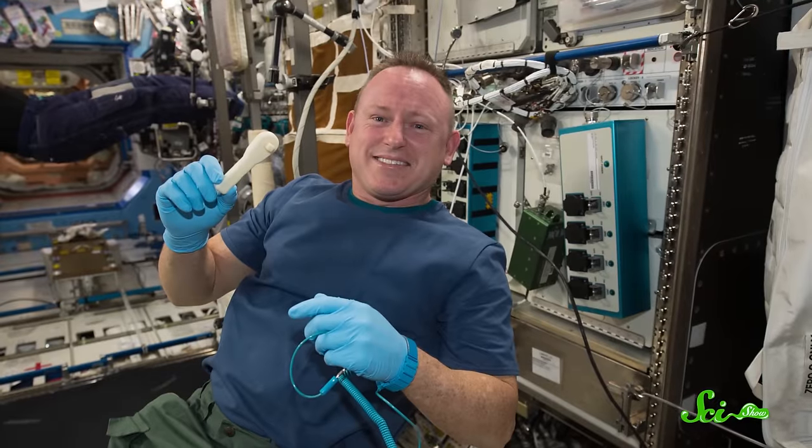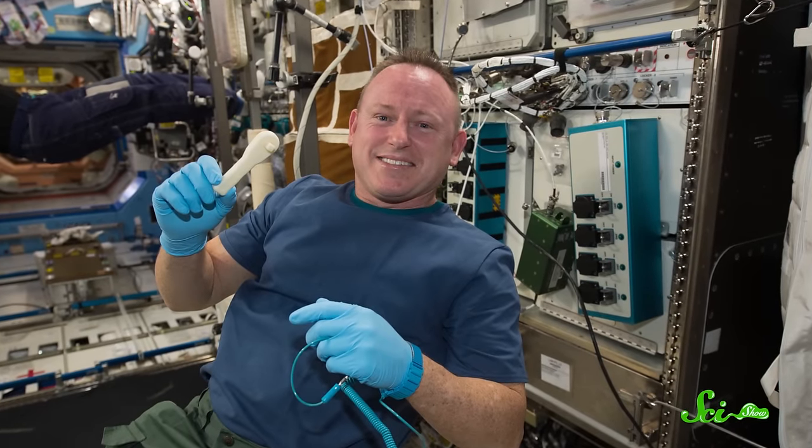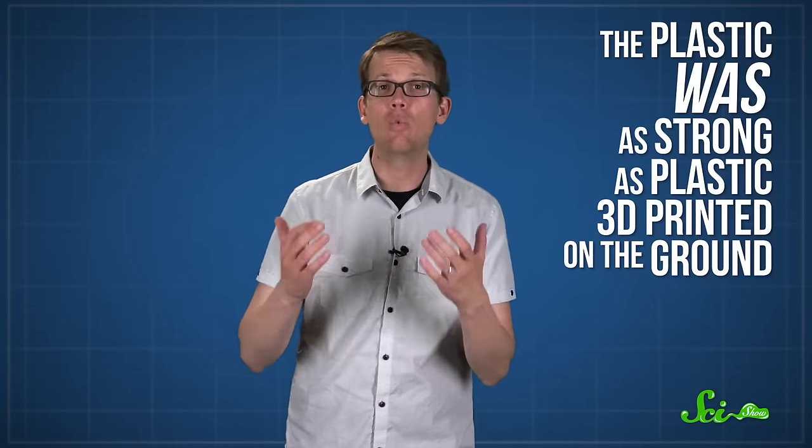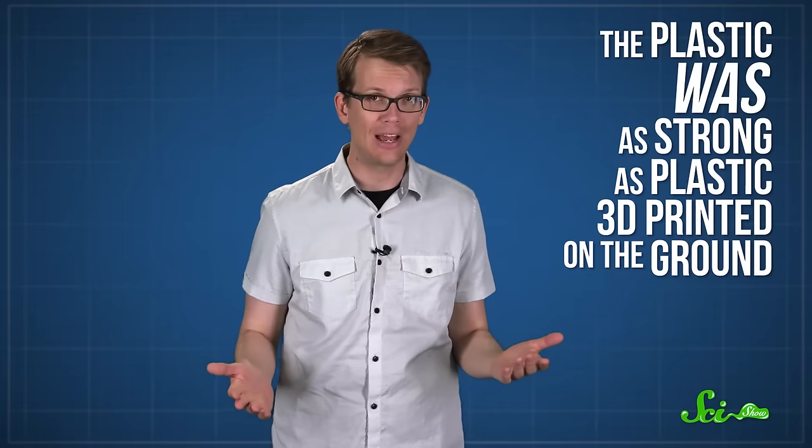So the ISS crew conducted a test and printed an ordinary ratchet wrench and 19 other objects like containers and spare parts on board the station. When the stuff they printed was sent back to Earth for testing, researchers found that the plastic was as strong as plastic 3D-printed here on the ground. Which means 3D printing can be used on the space station and on future long-term missions, allowing crew members to print any replacement parts they needed.